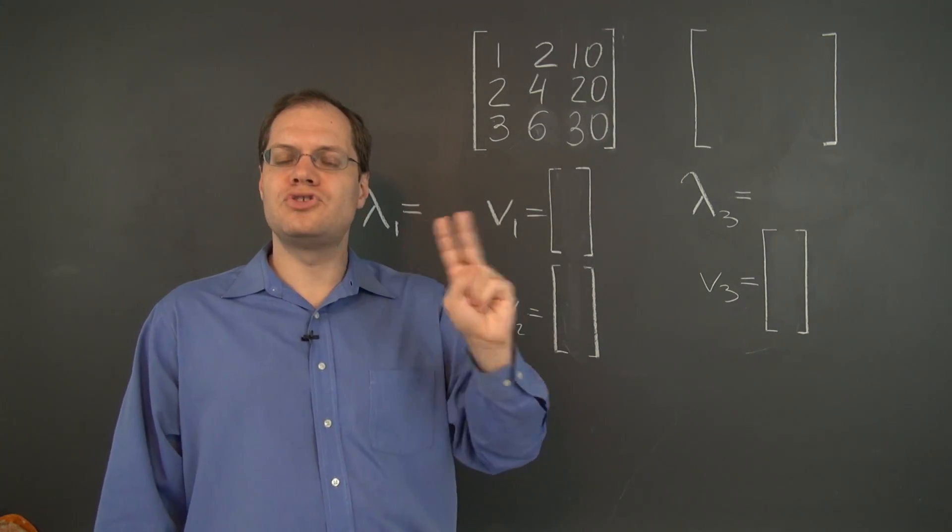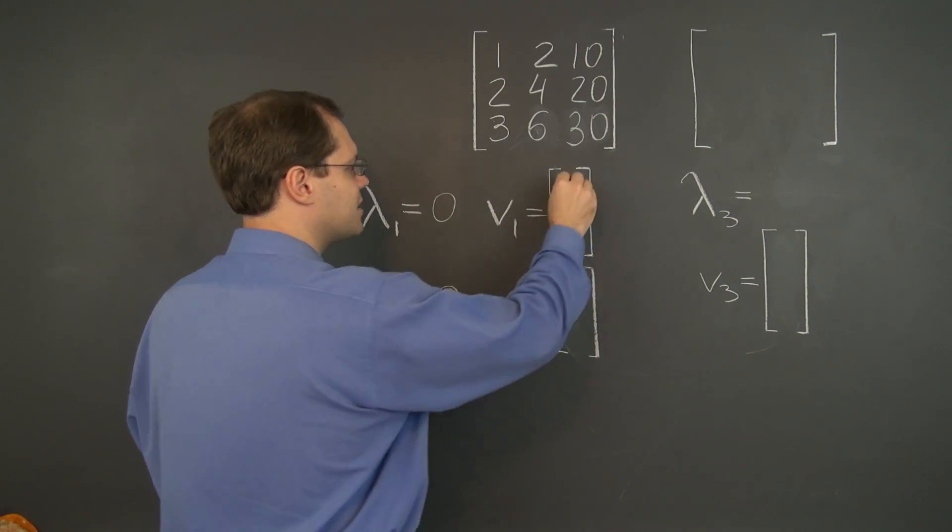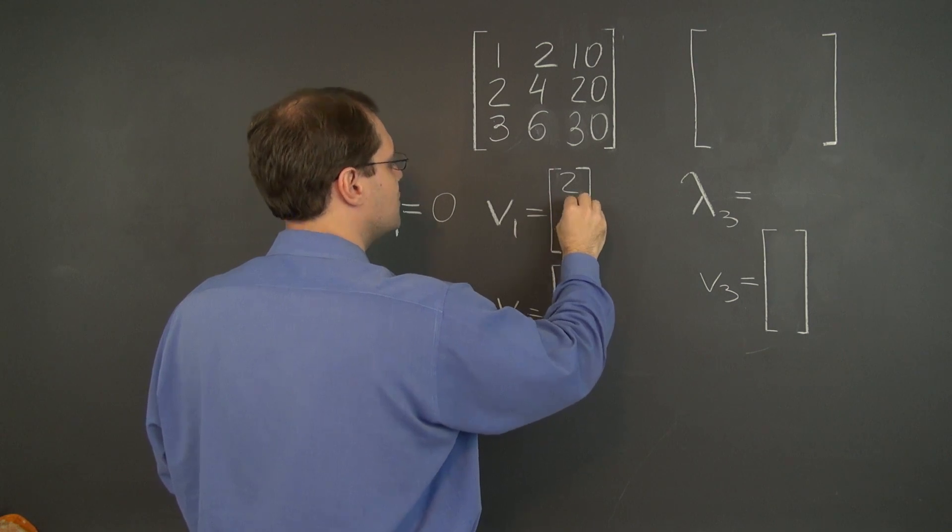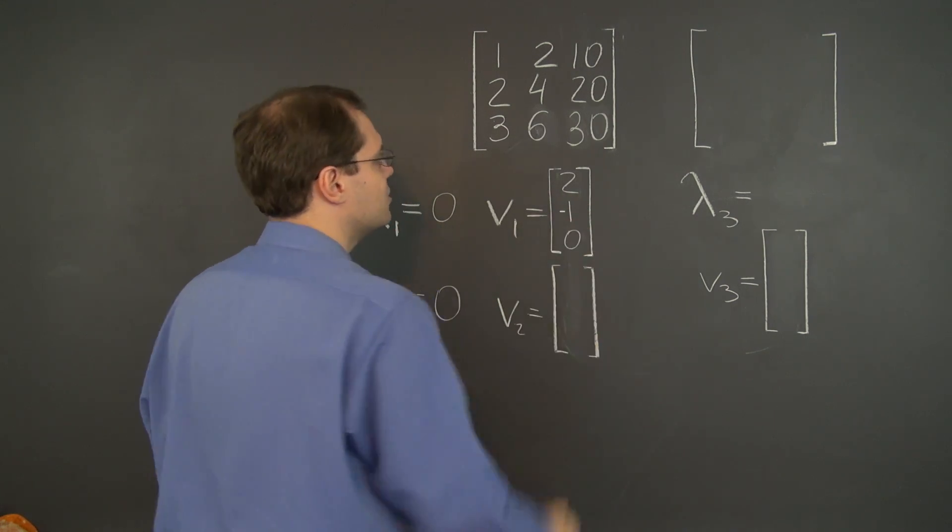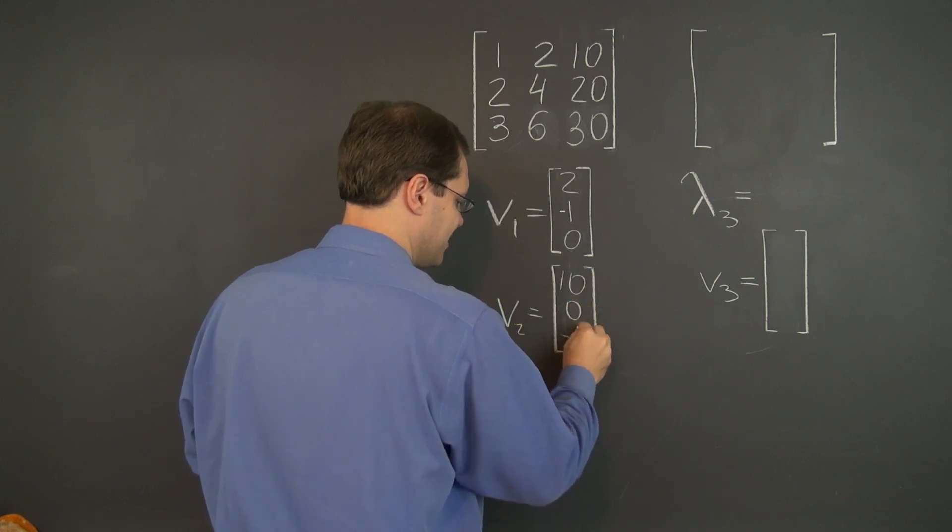So from this, we know not one, but two eigenvalues, and they both equal zero. And the first eigenvector is 2, negative 1, 0. And the other one is 10, 0, negative 1.